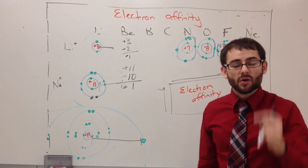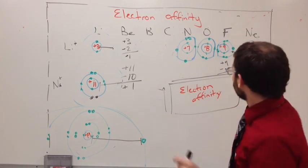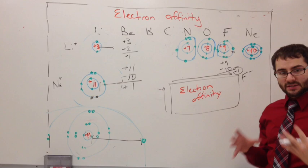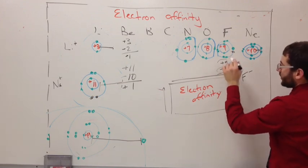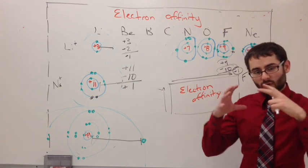Here's the problem though. What happens to the size of it? The size then becomes bigger. The reason the size becomes bigger is you have ten electrons now floating around and only nine protons to hold them in.